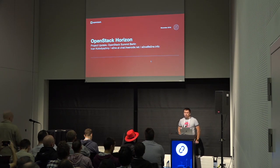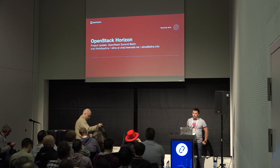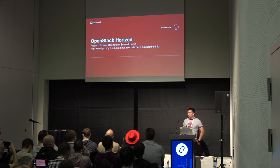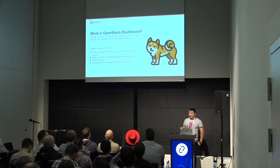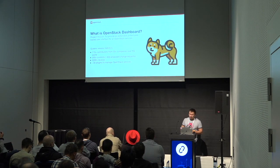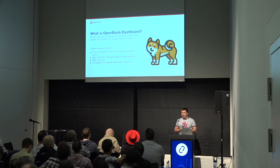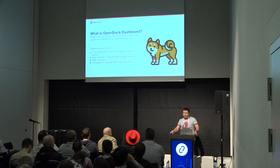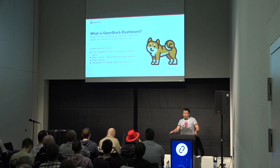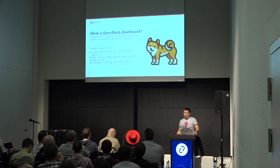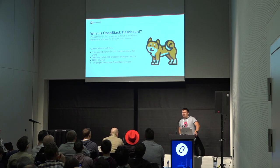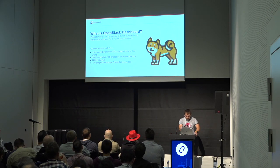I'll move on to cover the project highlights for the Stein release. If you have any questions regarding my slides or Horizon itself, please ask. In case somebody missed it: Horizon is the web UI for OpenStack. We support components like Nova, Keystone, Glance, Neutron, and Swift. Other components are implemented as Horizon plugins, so you have to install them separately.